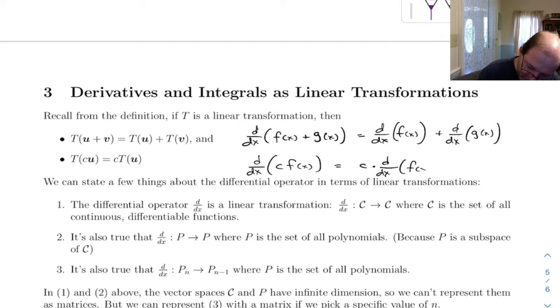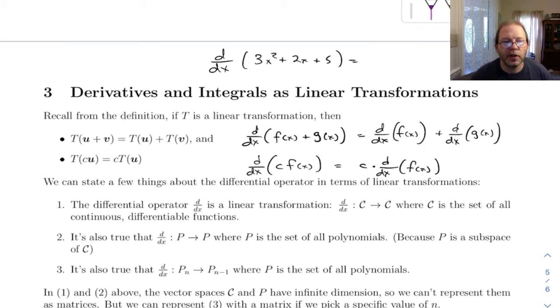You do those steps all the time. When you take the derivative of say 3x² plus 2x plus 5, you do that almost without thinking. You just get 6x plus 2, technically 6x plus 2 plus 0.